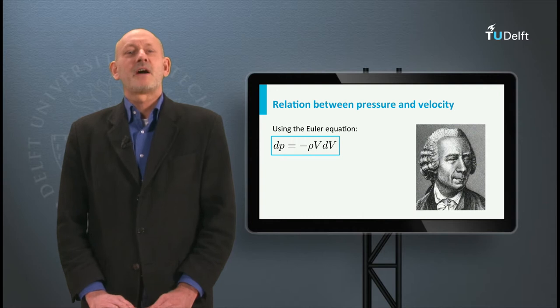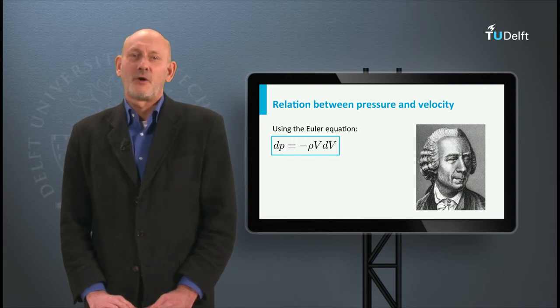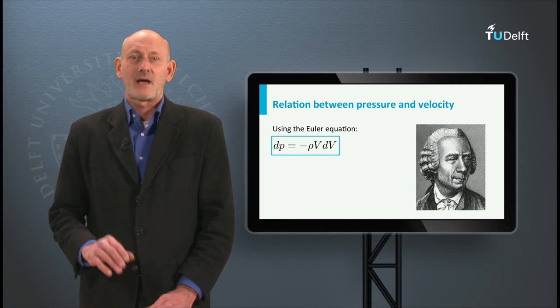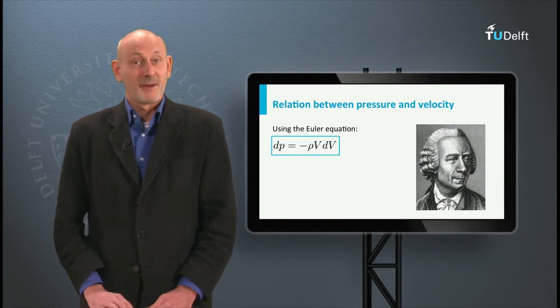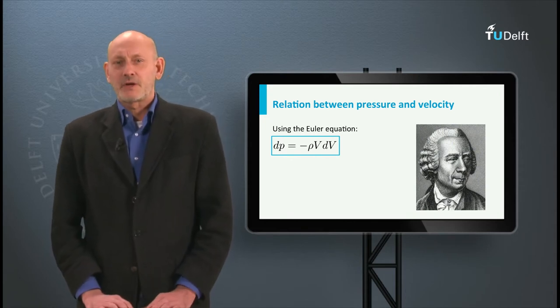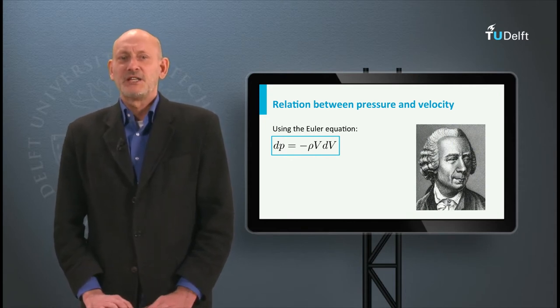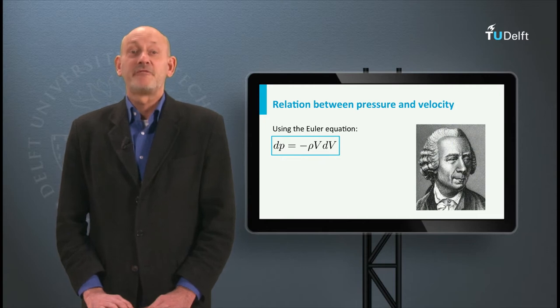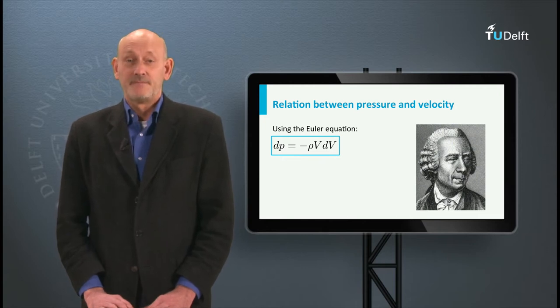In the previous lecture we derived the Euler equation for fluid flow from Newton's second law — force as mass times acceleration. We found the differential equation dP = −ρV dV.